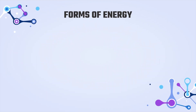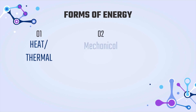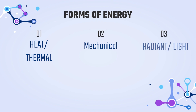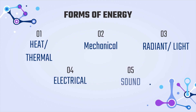Forms of energy — we're going to talk about five. The first one is heat or thermal energy. The second one is mechanical. The third is radiant or light. The fourth is electrical energy. And finally, the fifth one: sound.